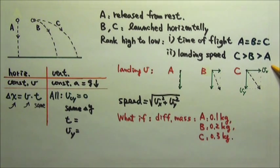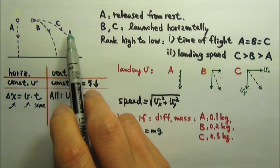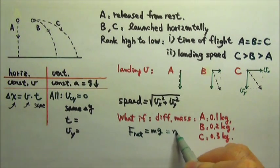This means nothing changes if they have different mass. We will learn in the forces unit that the gravitational force on an object is Mg. For all three falling objects, Mg is the net force which equals Ma,